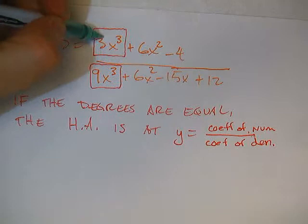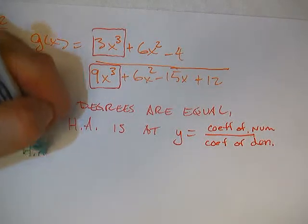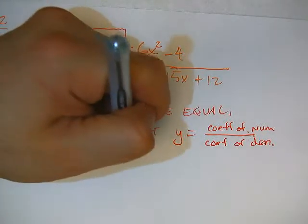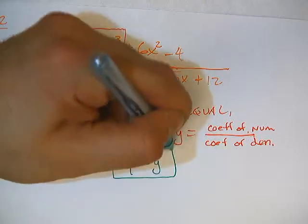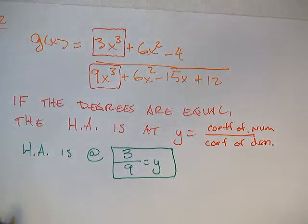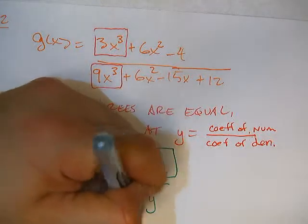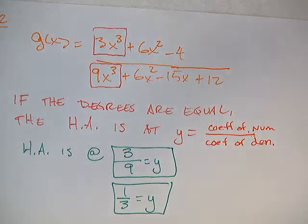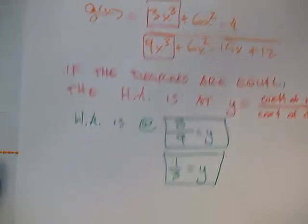then the horizontal asymptote is at y equals coefficient of numerator divided by the coefficient of the denominator. So when I say the coefficient of the numerator and the coefficient of the denominator, I mean just the leading term, just the leading term. So in this case, we have a 3 and a 9. So that means that my horizontal asymptote is at 3 over 9. So y equals 3 over 9. That's where my horizontal asymptote would be. And if you want to reduce that even further, you can say that that's going to be y equals 1 over 3. And that would be my horizontal asymptote.